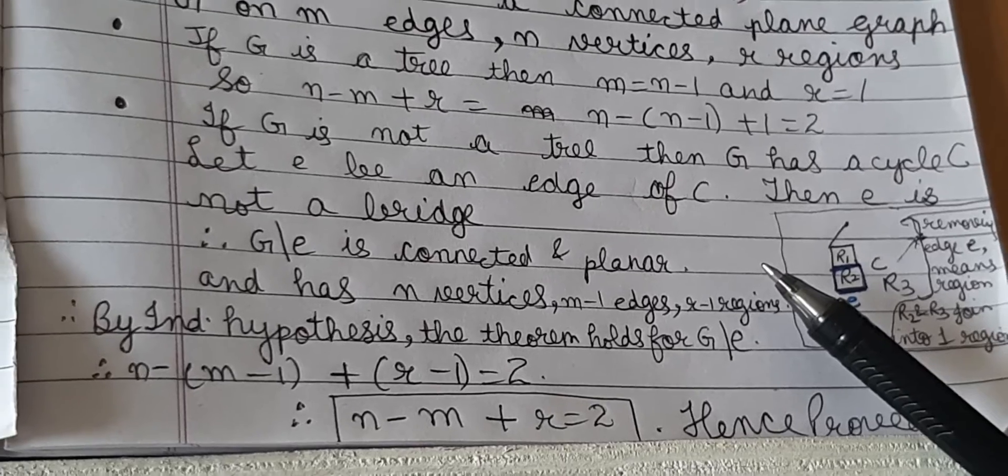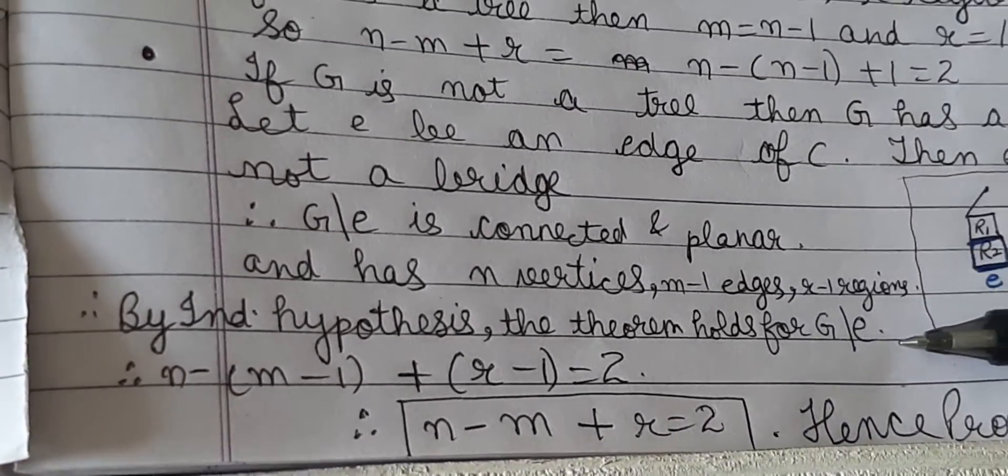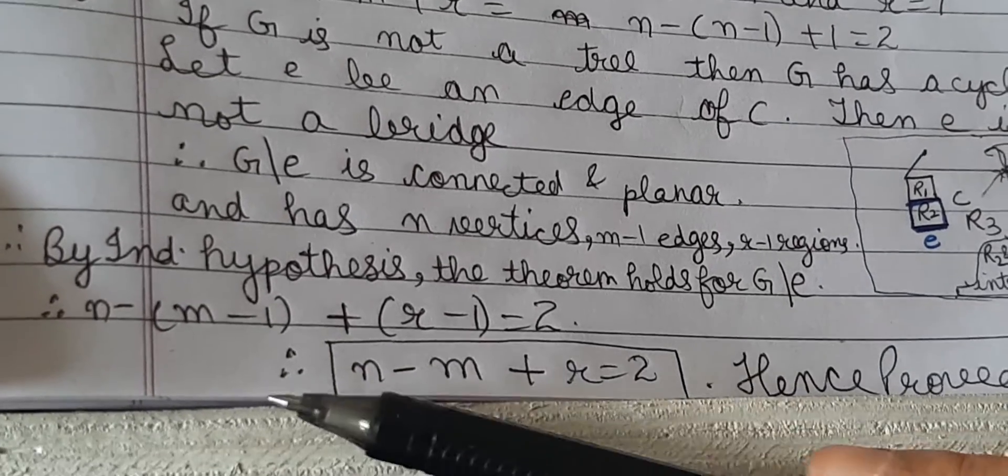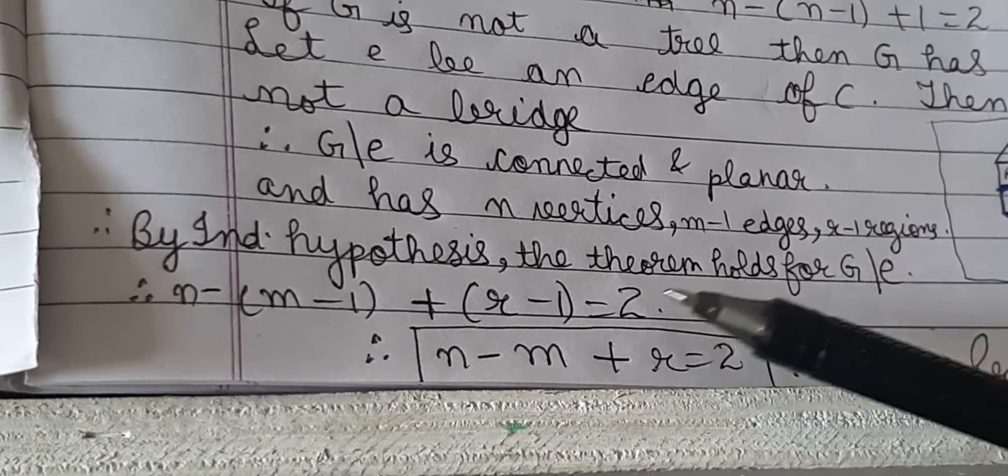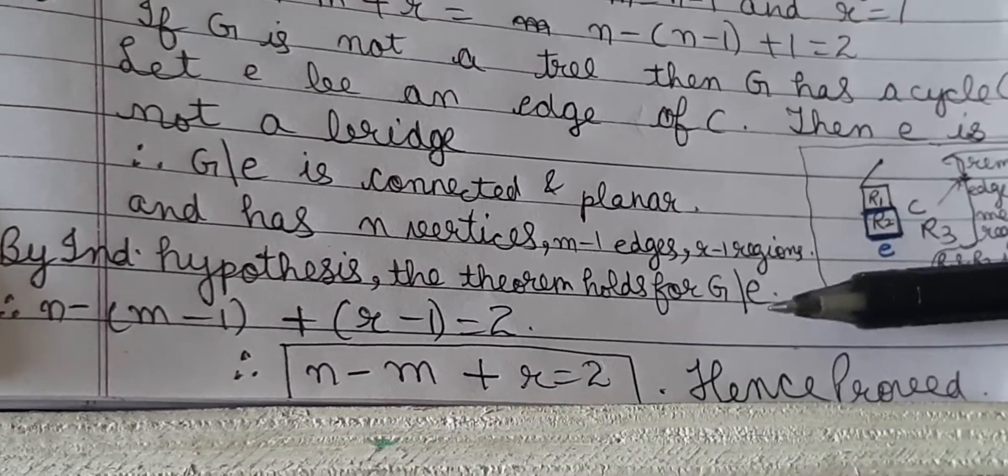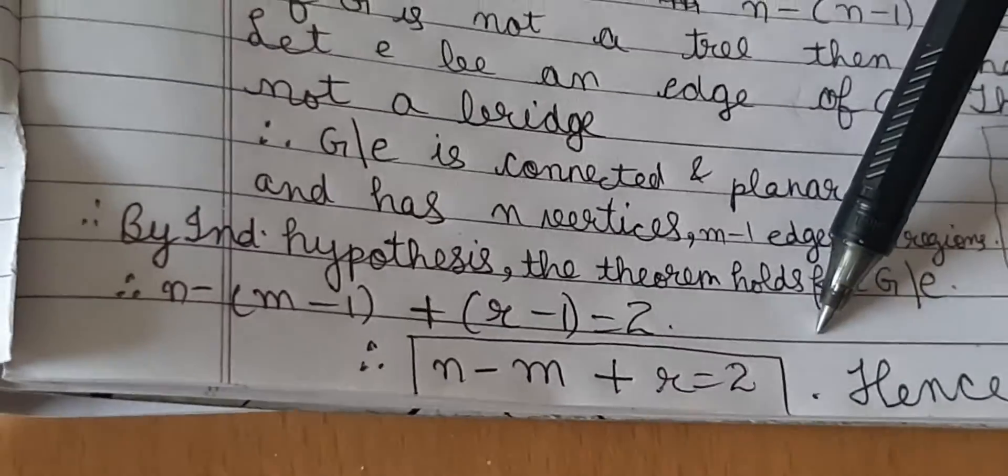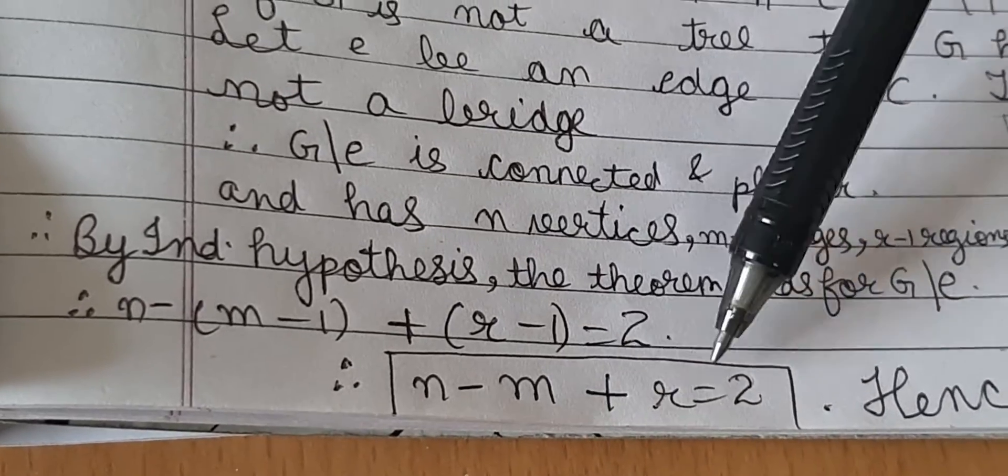So we know that its number of vertices minus number of edges plus number of regions must be 2. That is n minus (m minus 1) plus (r minus 1) equals 2. That's again by inductive hypothesis. But if you simplify that you will see n minus m plus r equals 2.